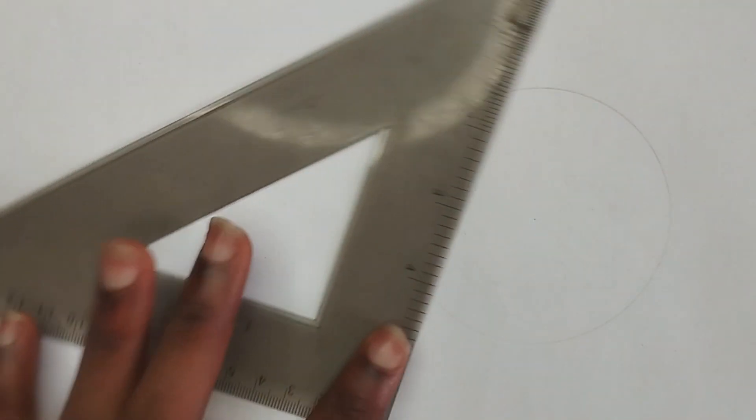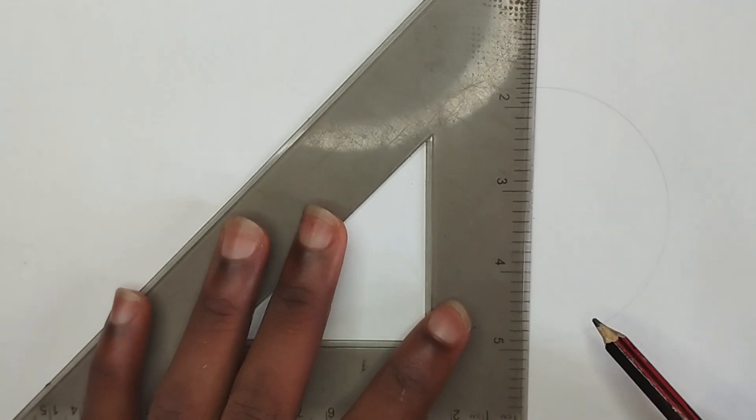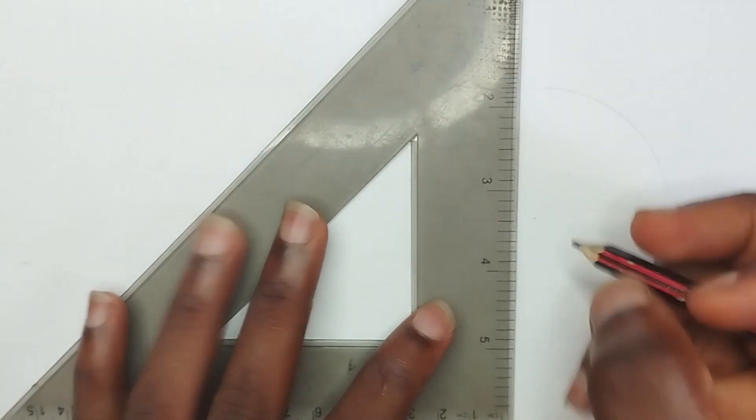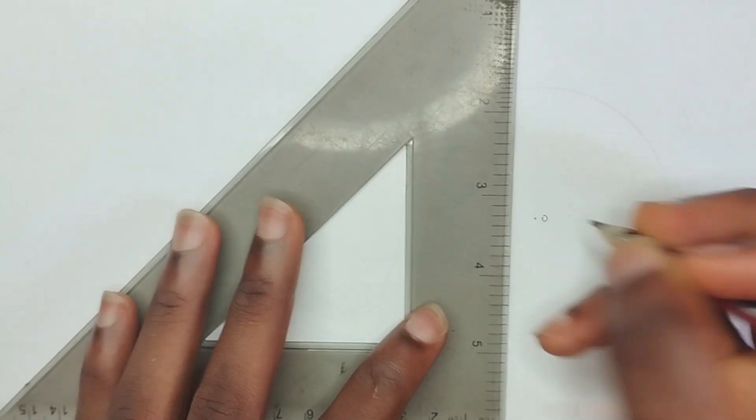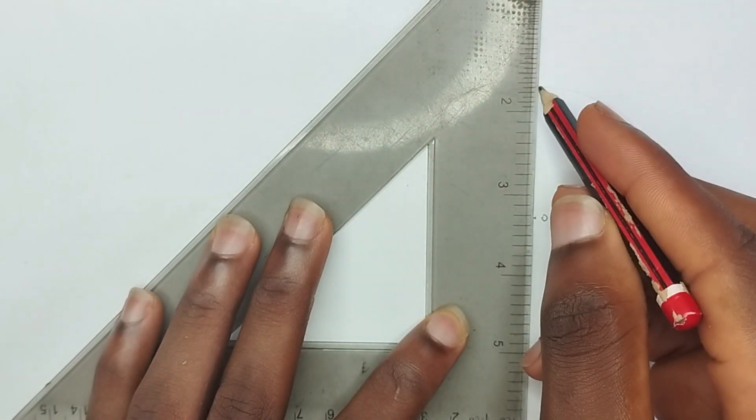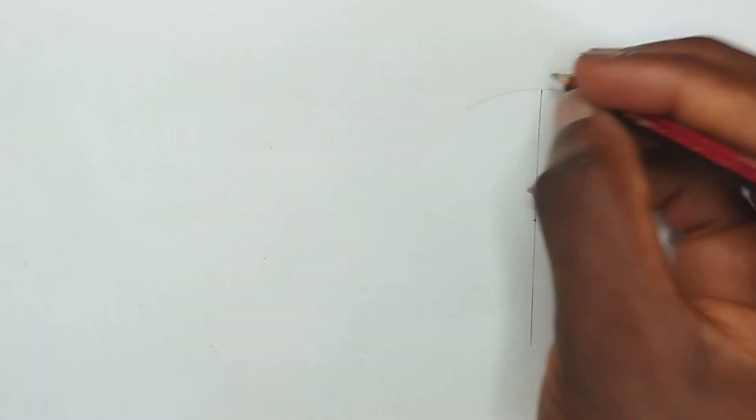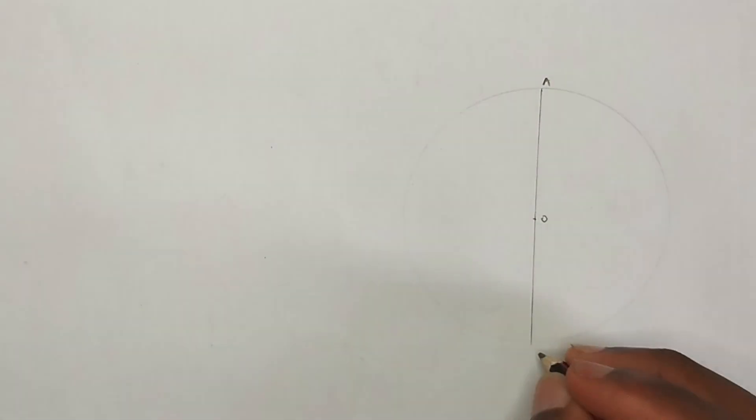Then I'm going to pick my set square and my pencil, placing it at that center. I'm going to label here as point O, then I'm going to draw a straight line that is dividing the circle into two equal parts. I'm going to label this point as point A and this point as point B.